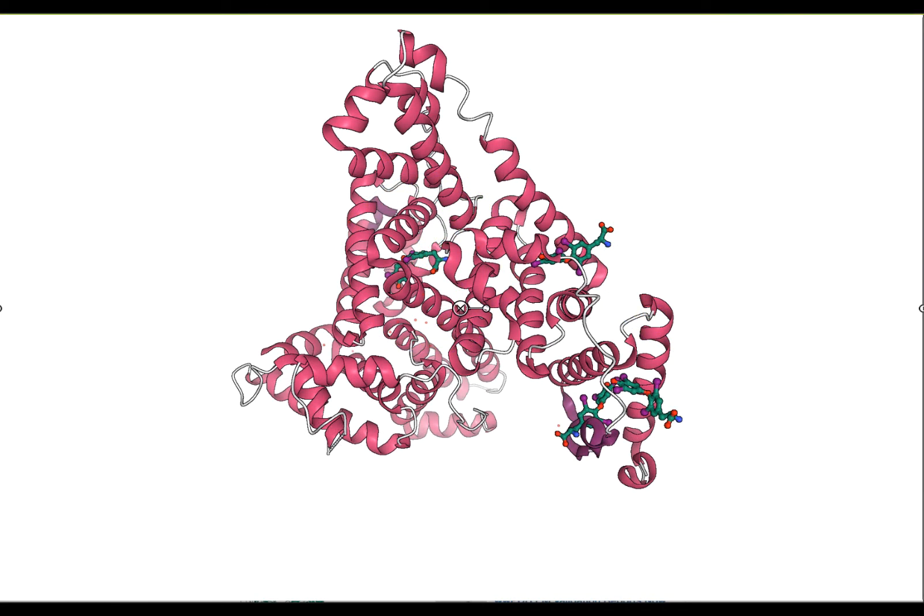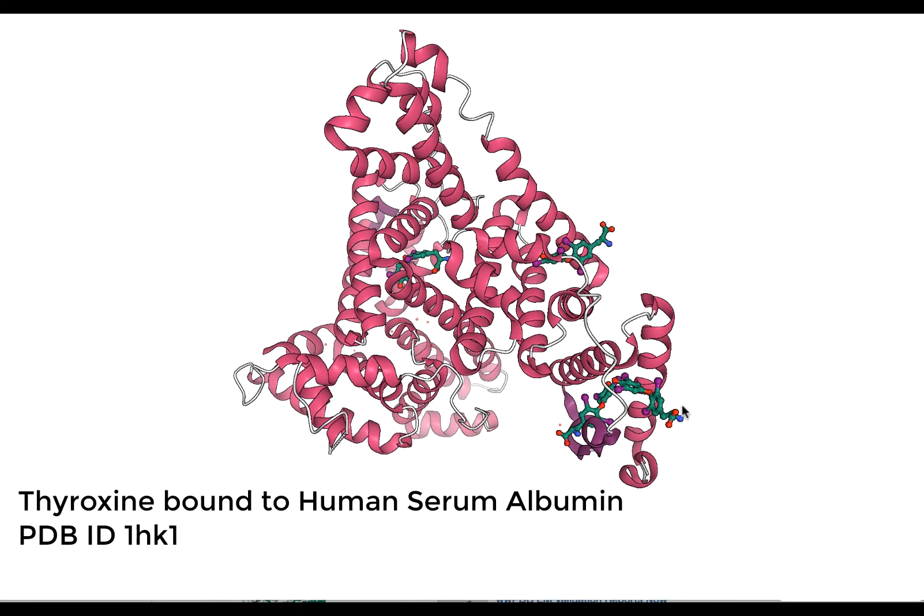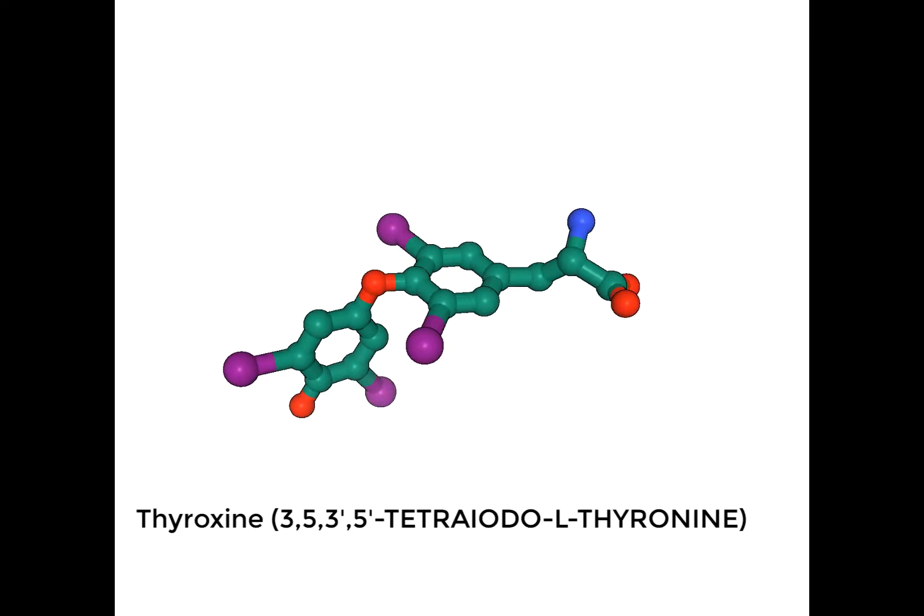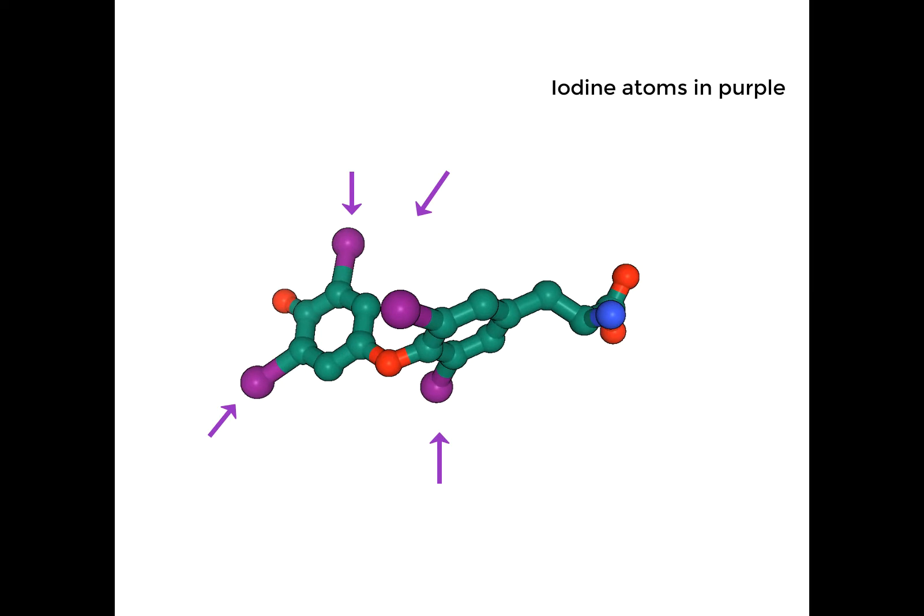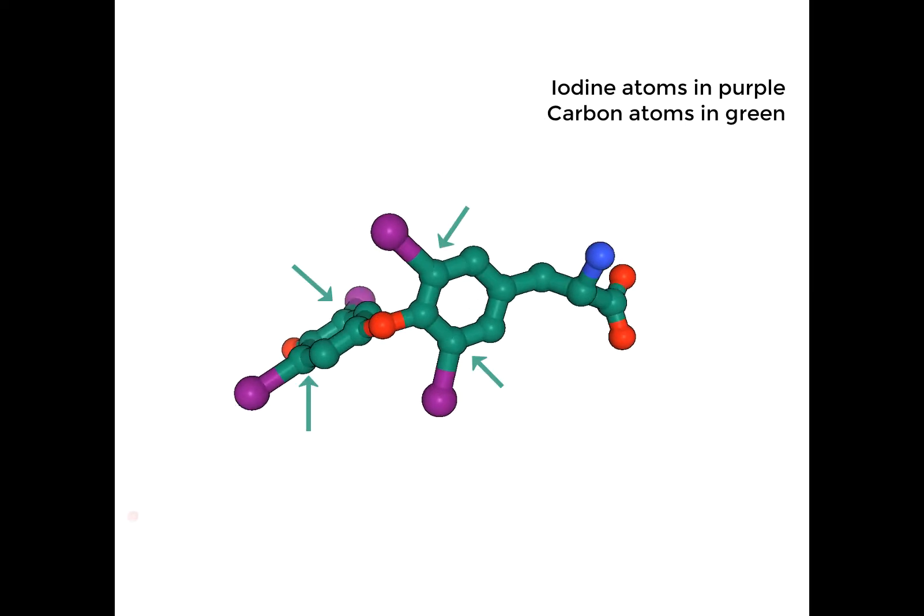Let us look at the example of the hormone thyroxin bound to human serum albumin. Note, several thyroxin molecules are bound to the protein in this structure. Thyroxin, or tetraiodo-L-thyronine, has four iodine atoms, each covalently linked to a carbon atom in these two ring structures.